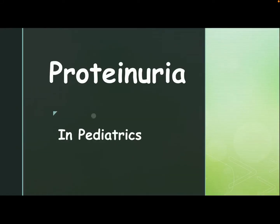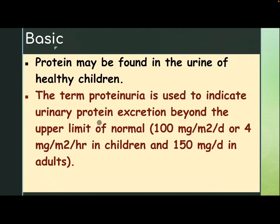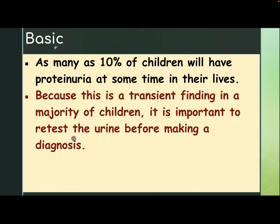Our subject today is proteinuria in pediatrics. Protein may be found in the urine of healthy children. The term proteinuria is used to indicate urinary protein excretion beyond the upper limits of normal: 100 mg per cubic meter per day or 4 mg per cubic meter per hour in children, and 150 in adults. As many as 10% of children will have proteinuria at some time in their lives. Because this is a transient finding in the majority of children, it is important to retest the urine before making a diagnosis.